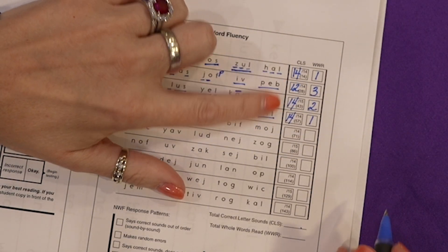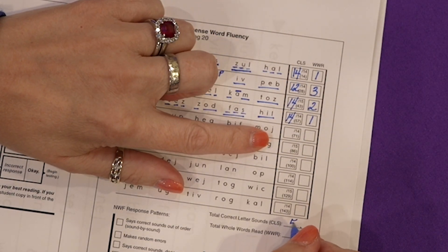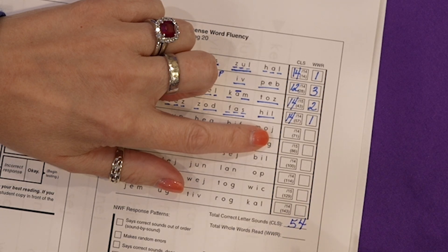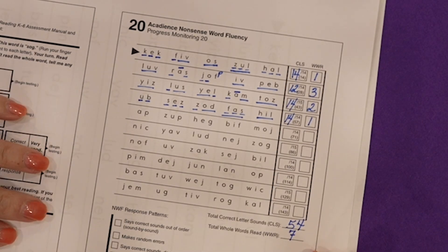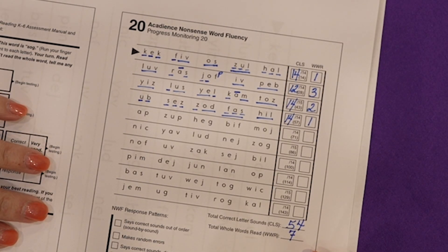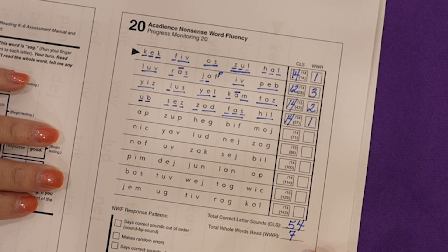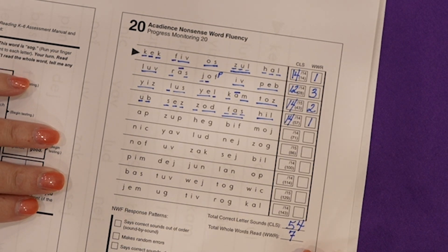So we have 54 correct letter sounds. And we have seven whole words read. And those are the important numbers that we would look for on the comparison chart to compare this work against the national norm.